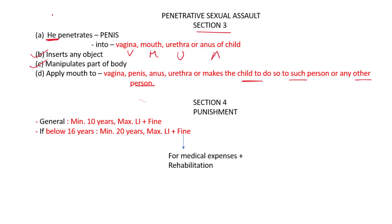So this is Penetrative Sexual Assault — penetration, object insertion, body manipulation, and mouth application. In section 4, the punishment is shown. If general, minimum 10 years of imprisonment, maximum life imprisonment, plus fine. If a child is less than 16 years old, minimum 20 years of imprisonment, maximum life imprisonment, plus fine. The fine is required for medical expenses or rehabilitation.